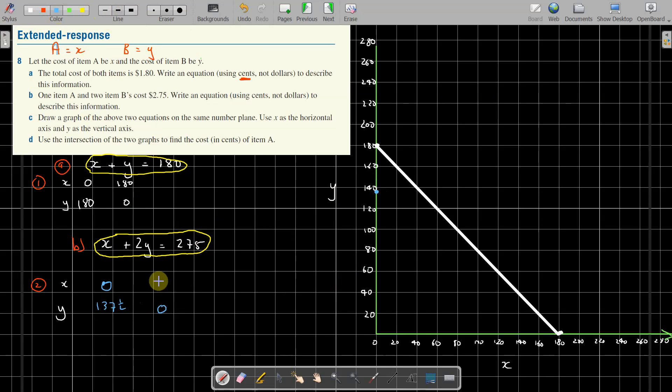And I imagine if Y is zero, then X is 137 and a half. And where's that? Y is zero, X is 137 and a half... no no no no no no. Mistake again.